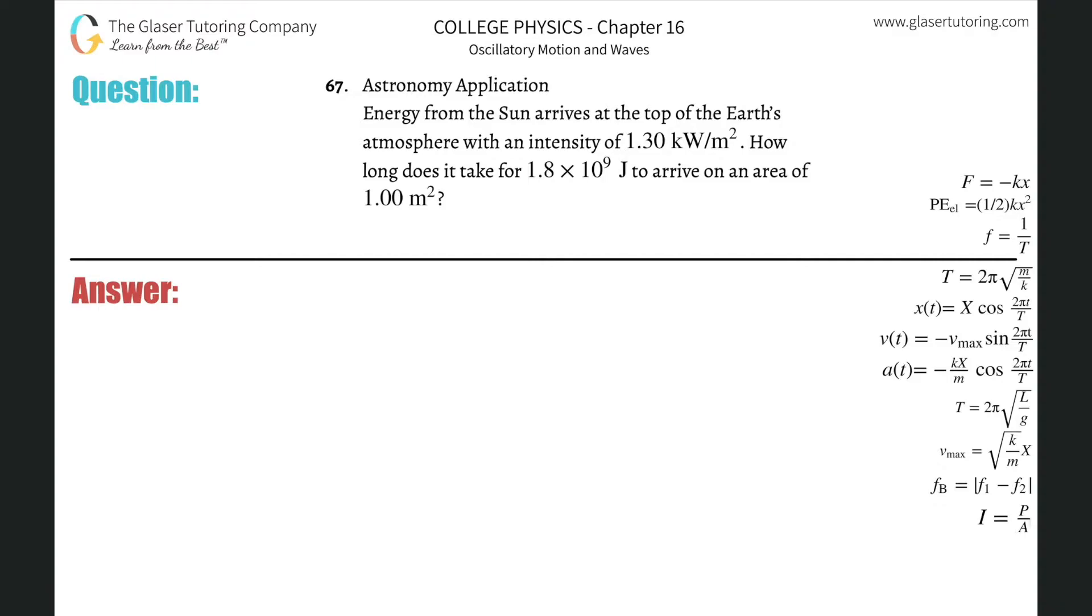Number 67, astronomy application. Energy from the sun arrives at the top of Earth's atmosphere with an intensity of 1.3 kilowatt per meter squared. How long does it take for 1.8 times 10 to the 9 joules to arrive on an area of 1 meter squared?